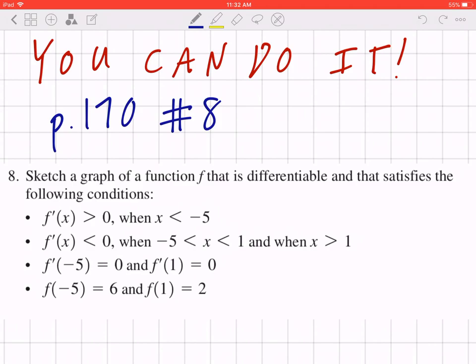f prime is positive when x is less than negative 5. f prime is negative when x is in between negative 5 and 1 and when x is greater than 1. f prime of negative 5 is 0, f prime of 1 is 0, f of negative 5 is 6, and f of 1 is 2.